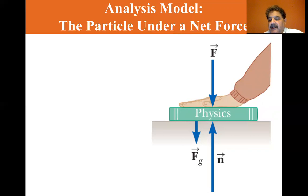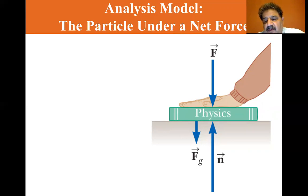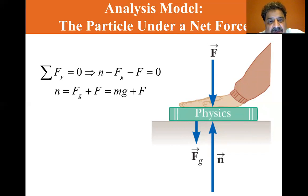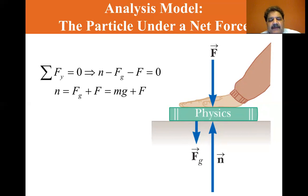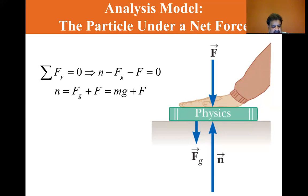The normal force N is not always equal to the magnitude of FG. Imagine a book lying on a table and you push down on the book with a force F. Because the book is at rest, the acceleration equals zero, so the sum of forces in the y direction equals zero. The normal force is the only upward force; the gravitational force and the force you're pushing with are both downward. So N equals FG plus the force you're pushing with, which equals mg plus F. Here the normal force is greater than the gravitational force of the physics book.